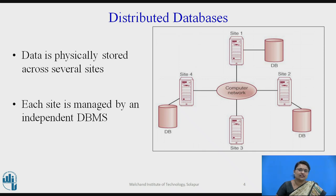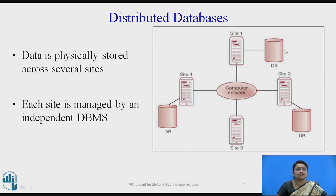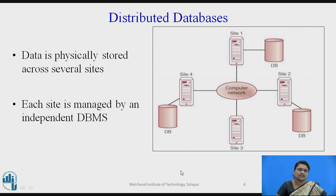In a distributed database, the data is distributed among various sites — site 1, site 2, site 3, site 4 — and every site has its own database. So the database is stored at several sites, and every site is managed by its own independent database management system. That is what a distributed database is.